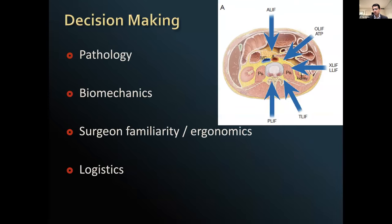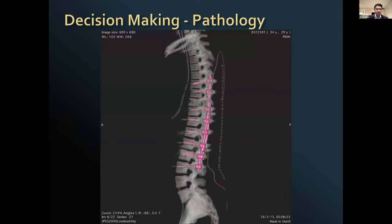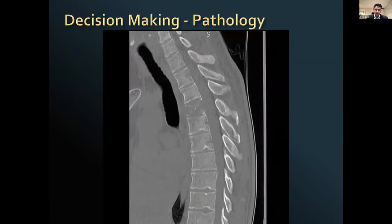This last section gives a brief overview on decision-making as to procedural choice. An important consideration is the direction of pathology — anterior pathology is best treated from an anterior approach and posterior from a posterior approach. Some pathology needs a combined approach. This patient with multiple spinal fractures needed a long-segment fusion, best done from the posterior approach.